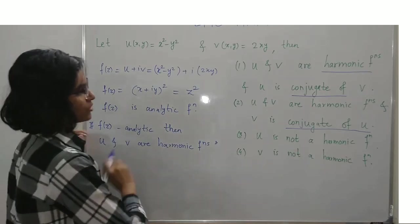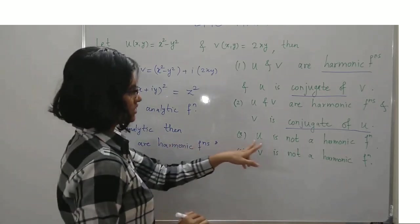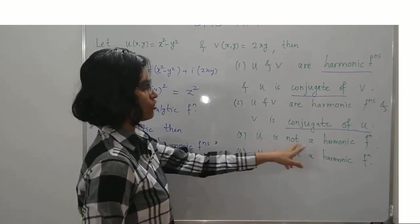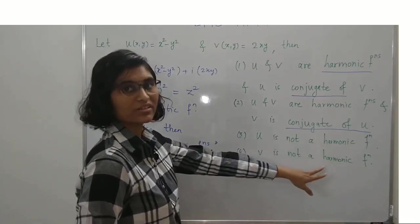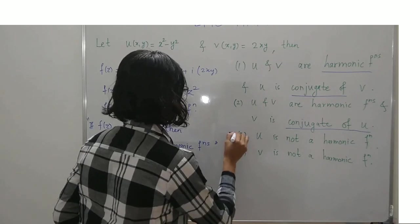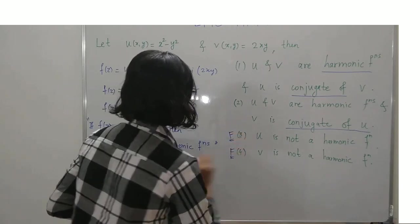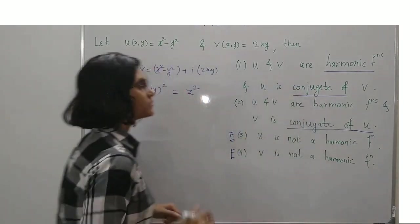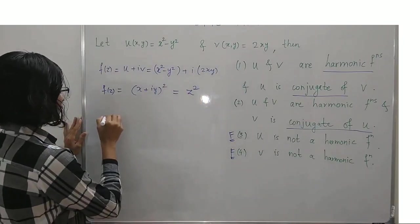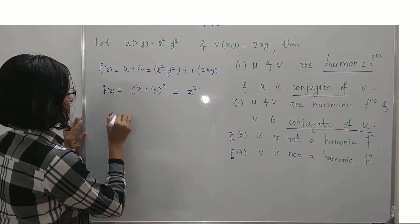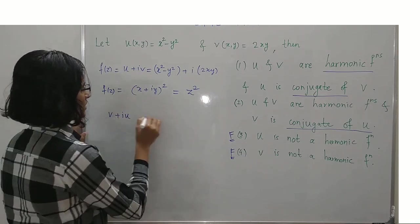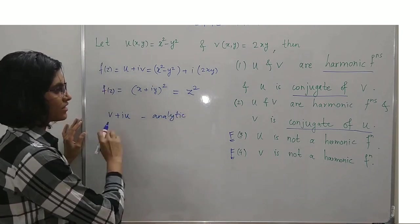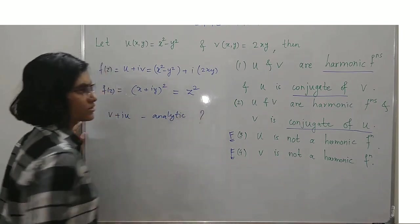Since f is analytic, u and v are both harmonic, so options 3 and 4 (saying u or v is not harmonic) are false. Now, u is conjugate of v means the function v + i·u must be analytic. Let us check whether v + i·u is analytic.